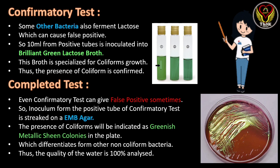In the confirmatory test, Brilliant Green Bile Lactose broth is used — a specialized media for growing coliform bacteria that also inhibits the growth of other bacteria. A Durham tube is also added in this media to indicate gas formation. 10 ml of sample from the positive tubes of the presumptive test are added to the Brilliant Green Bile Lactose broth and incubated. If gas production in the Durham tube and growth are observed after incubation, we can confirm that the gas production is due to coliform bacteria.